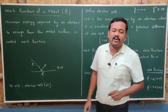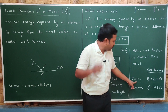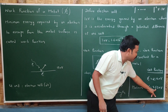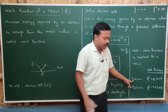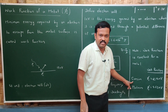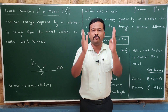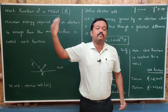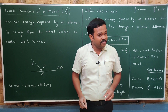This work function is constant for a metal. For example, the work function of cesium is 2.14 electron volts, while for platinum it is 5.65 electron volts. This means the electrons of cesium are loosely bound compared to those of platinum, so a smaller amount of energy is required to remove the electron from cesium compared to platinum. Based upon the work function, we supply the required energy to remove the electrons from that surface.